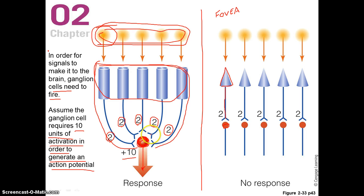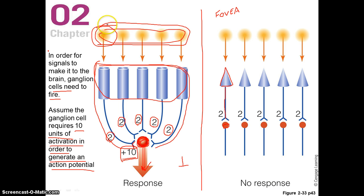The answer is yes, it will. Because the activity of a cell depends on the total amount of input it's receiving. These are all excitatory connections — whenever we draw an inhibitory connection, it looks like an upside-down T. All of these signals summate — they get added together. So: 2, 4, 6, 8, 10 — that gets this ganglion cell up to the 10 units of activation it needs to fire. It will elicit an action potential from the ganglion cell, which travels up to the brain to signal that there's a stimulus in the environment. Even though it's weak, it's enough to trigger this ganglion cell because of all this convergence.